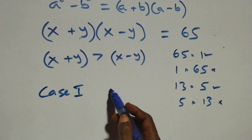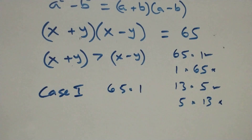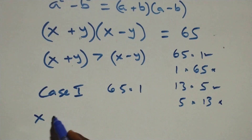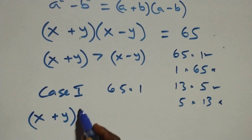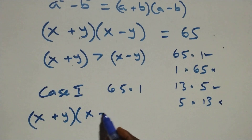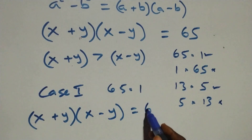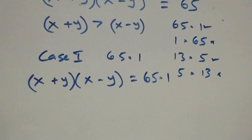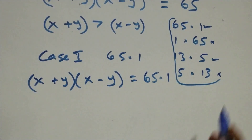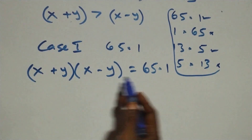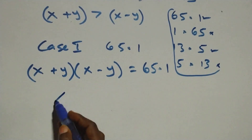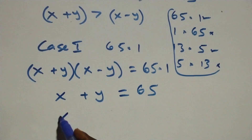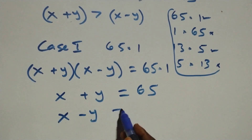For Case 1, which is 65 times 1: the equation (x plus y)(x minus y) equals 65 times 1 gives us x plus y equals 65 and x minus y equals 1.